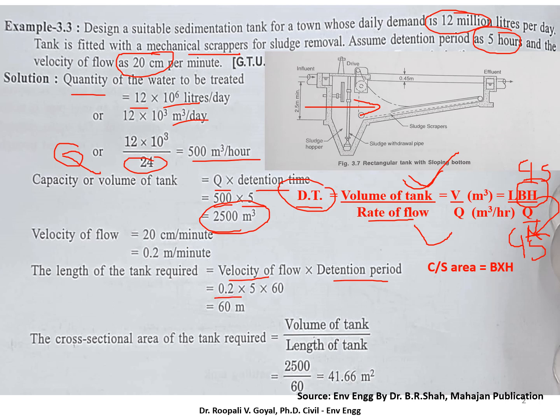So 0.2, that is meter per minute, our 5 hours of detention time. So convert it into minutes to multiply by 60. So you will get length 60 meter here.